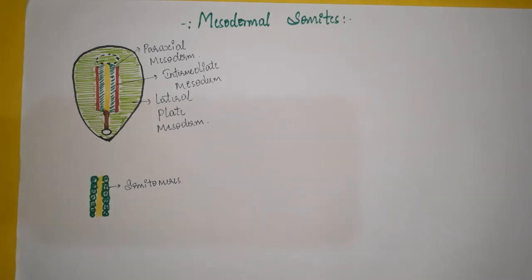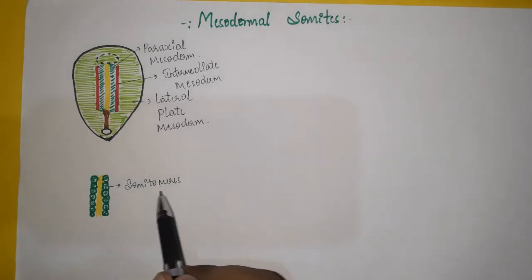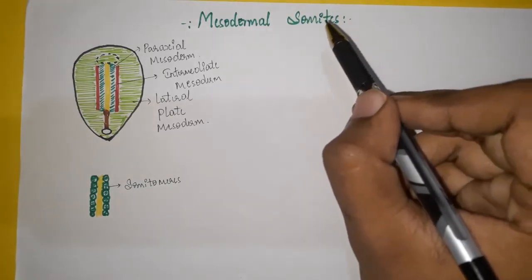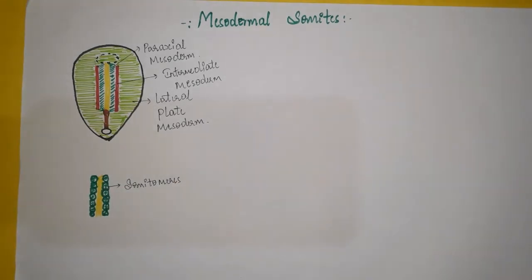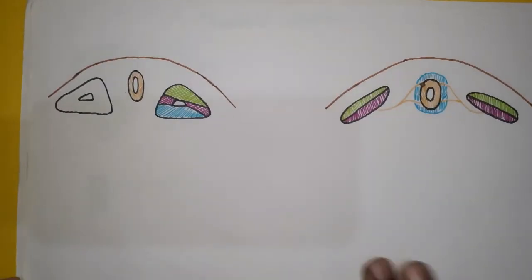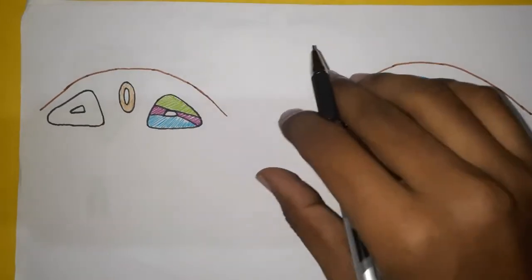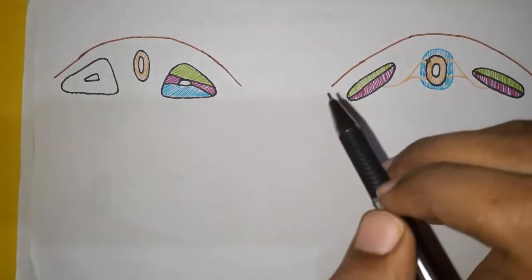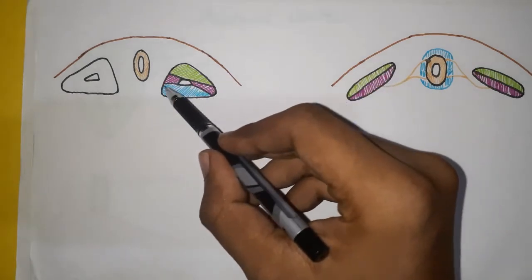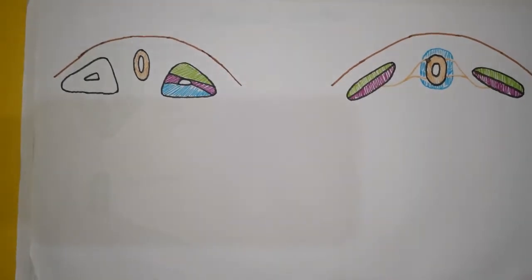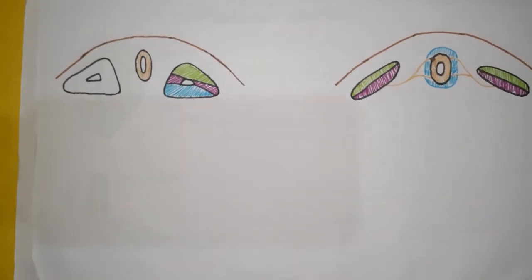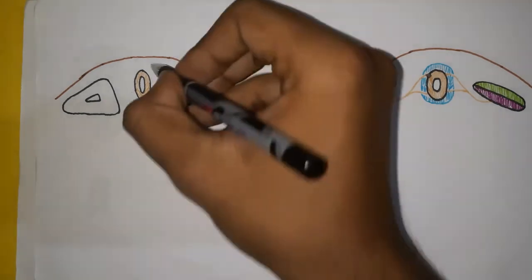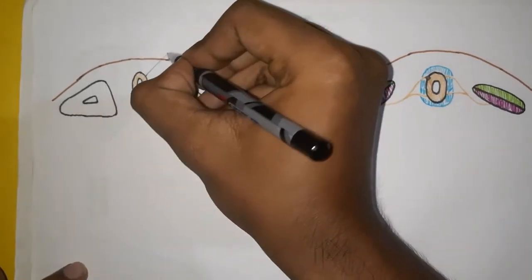Somatomeres further develop to form the final mesodermal somites. As somatomeres are converted into mesodermal somites, the notochord degenerates and the neural tube forms — the neural tube forms brain and spinal cord. The final mesodermal somites are also segmented, but in cross section they appear triangular, and there is also a cavity inside this triangular mesodermal somite.